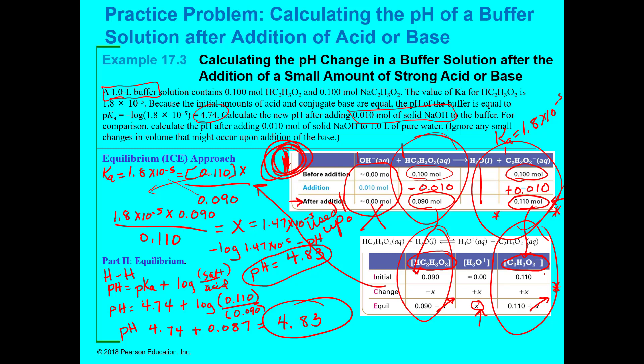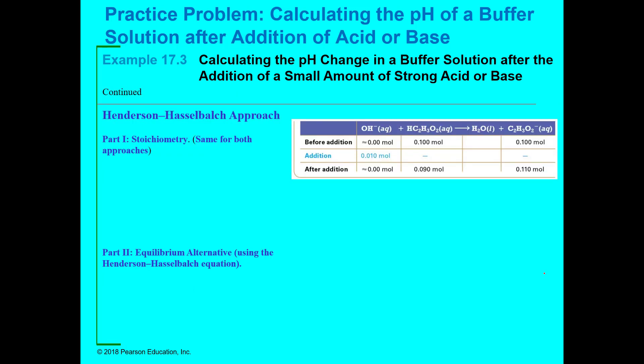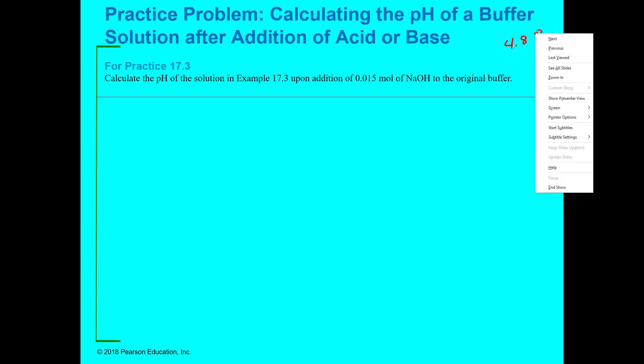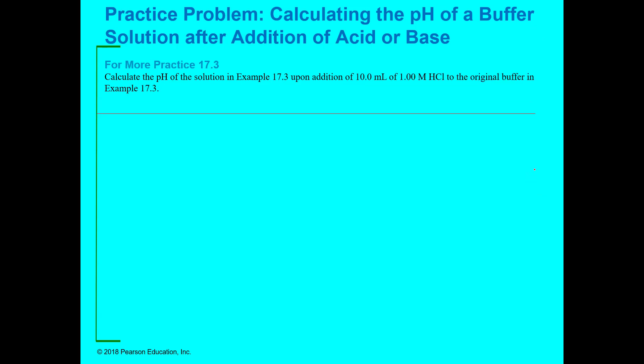You've always got to do that first stoichiometry step, because you've got to see what the new concentrations are after you've made that shift in equilibrium. Here is your practice: the original solution from the previous example — this time adding 0.015 moles of sodium hydroxide. I got 4.88 for that one. And then you have another practice on the addition of acid — you've got to figure out how many moles you're adding. You should get 4.65.